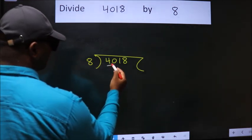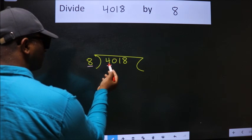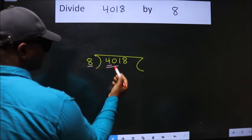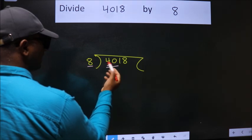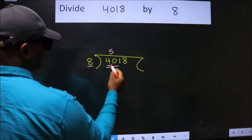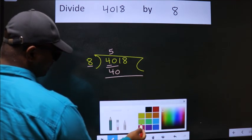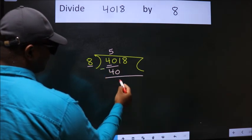Here we have 4. Here 8. 4 is smaller than 8, so we should take two numbers, 40. When do we get 40 in 8 table? 8 fives 40. Now we should subtract. We get 0.